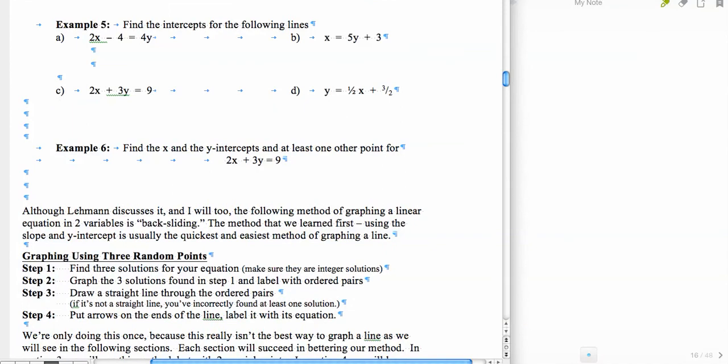So why don't you copy these down, finding the intercepts for these lines, a through c. And why don't you try those on your own and then come back and see if you got it correct or not.